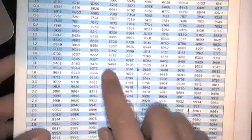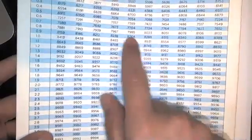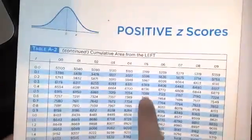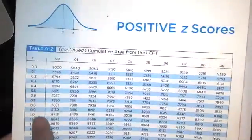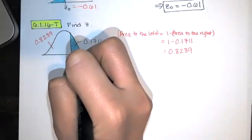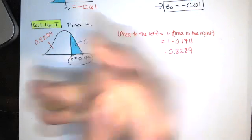8289 is right there. That corresponds to z equals 0.95. So that's 0.95. And that's it. Easy breezy. That's our answer.